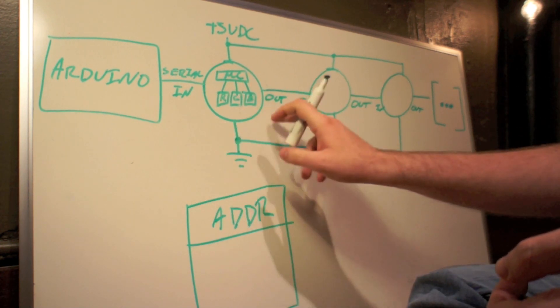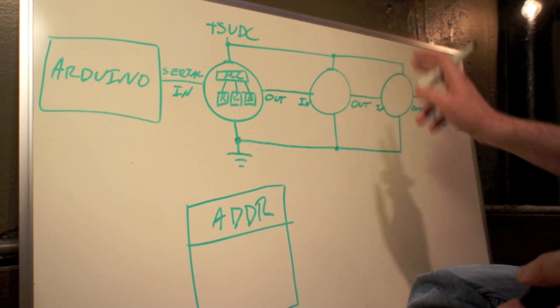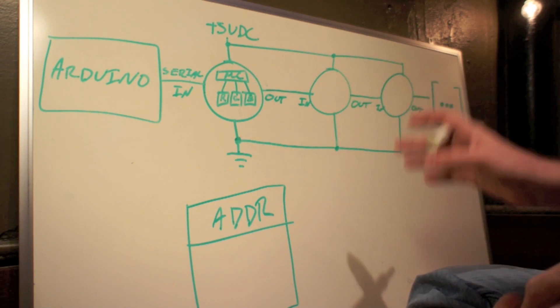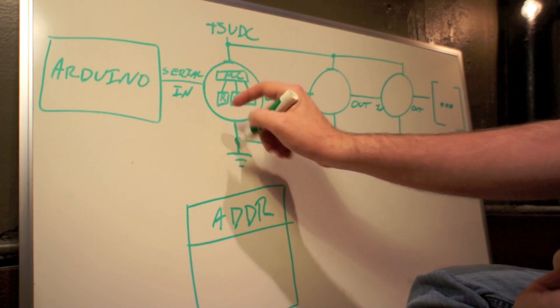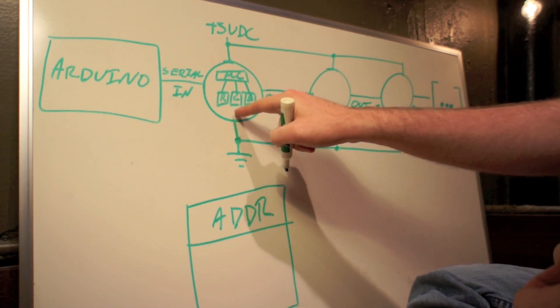That bulb sets its address from the next packet that's sent. The next bulb sets its address from the next packet that's sent, and so on and so on, until either 36 or 50 bulbs later, you've addressed the entire string.